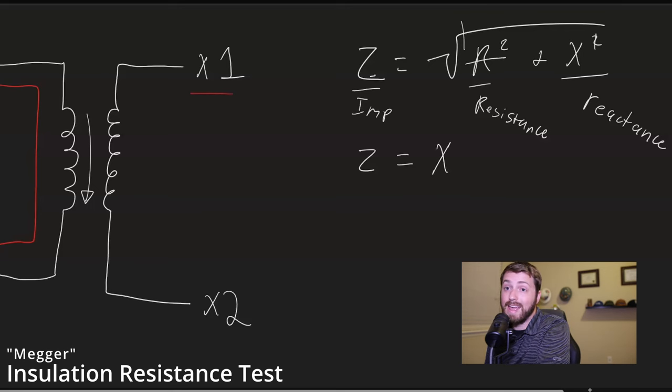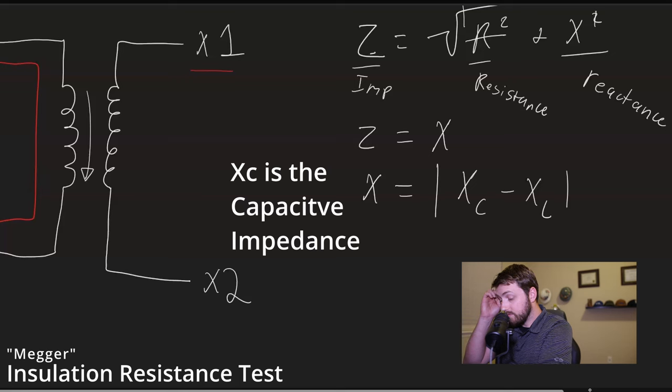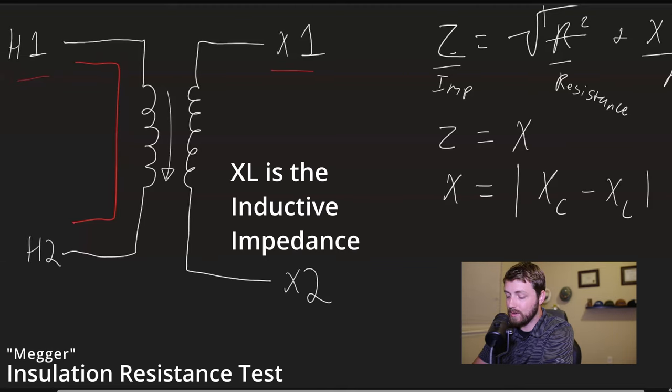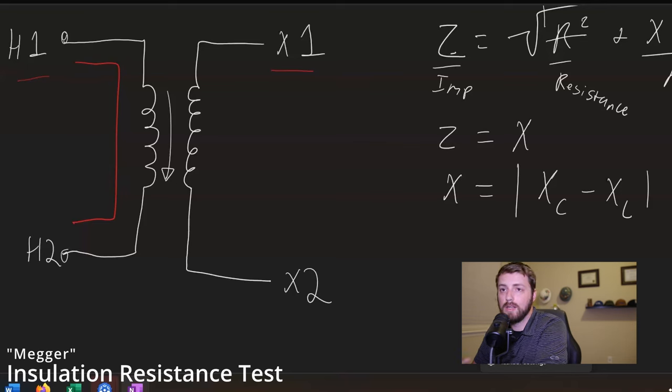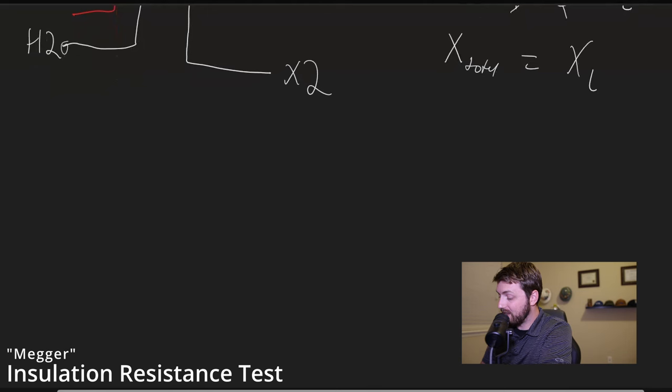So we're left with Z equals, we can simplify this down to Z equals X. Well what is X equal in this case? Well it's our reactive impedance. Now the formula to find reactive impedance in a circuit like this, it's going to be X total equals the absolute value of X_C minus X_L. Well, I can tell you just intuitively there's not really any capacitance between this point and this point, right? There's not a capacitor in there, it's effectively just a big long spun together wire. So again we can simplify, take that part out, and we can say X total equals X_L.